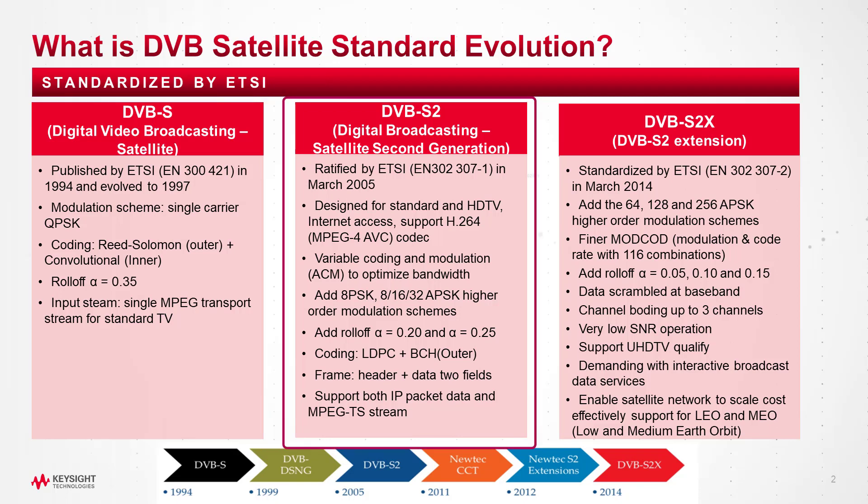In 2005, there is an evolution for the second generation of DVB-S called DVB-S2, which can support HDTV service plus Internet access. It adds more modulation formats such as 8PSK, 16APSK, and 32APSK, more roll-off factor support, and two-layer channel coding with LDPC for inner coding and BCH for outer coding.